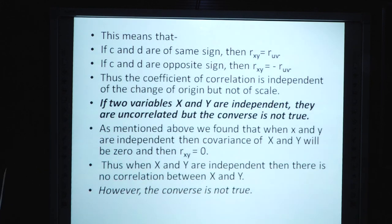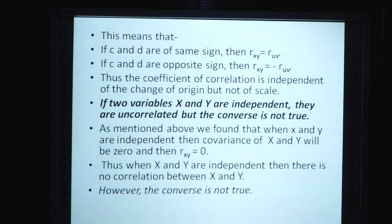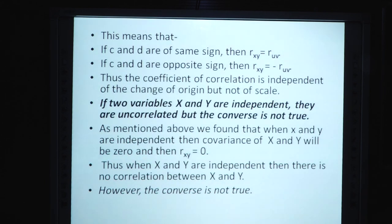If two variables X and Y are independent, they are uncorrelated, but the converse is not true. When X and Y are independent, Covariance(X,Y) = 0 and r_xy = 0. Thus when X and Y are independent, there is no correlation between them; however, r = 0 does not necessarily imply independence.